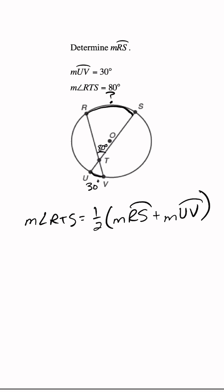Now if we just plug in everything that we have, we can solve for the missing arc. So the measure of angle RTS is 80 equals one half times the measure of arc RS, which is what we're looking for, so I'm just going to let that be x, plus the measure of arc UV is 30.